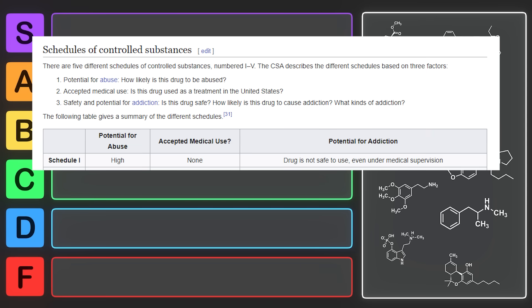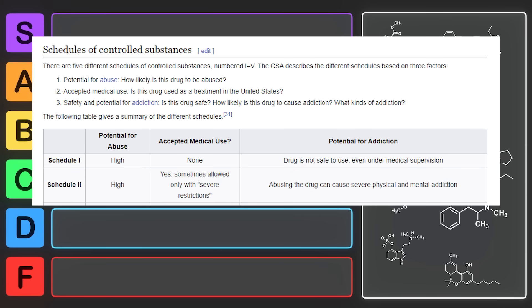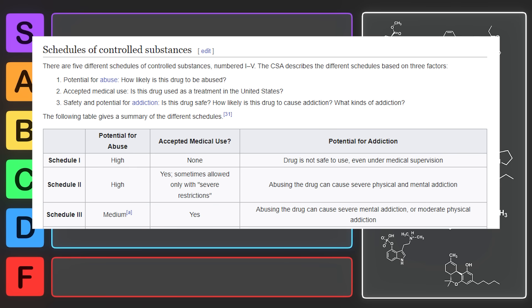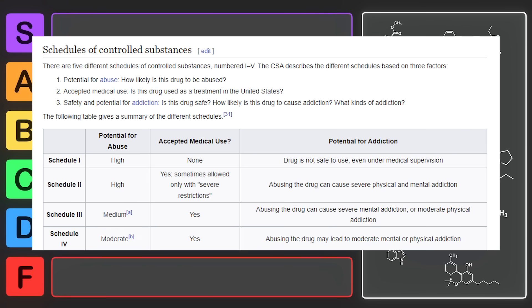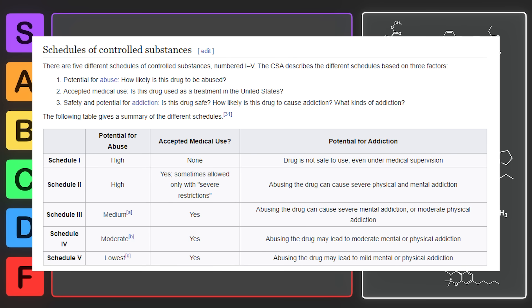Drugs in Schedule 1 have a high potential for abuse and no accepted medical uses. Drugs in Schedule 2 have a high potential for abuse, and sometimes are allowed for medical uses with some severe restrictions. Drugs in Schedule 3 have a medium potential for abuse, but they usually also have accepted medical uses. Drugs in Schedule 4 have moderate abuse potential, but they also have accepted medical uses. Finally, drugs in Schedule 5 have the lowest potential for abuse, but they do have accepted medical uses.